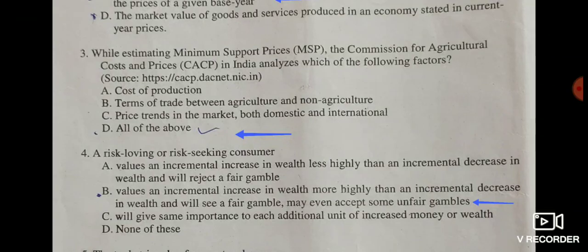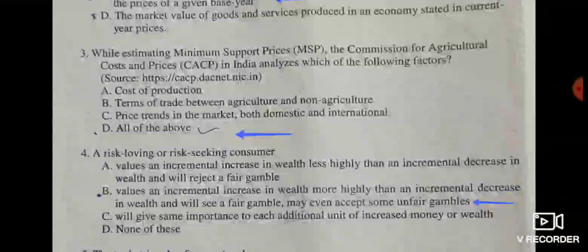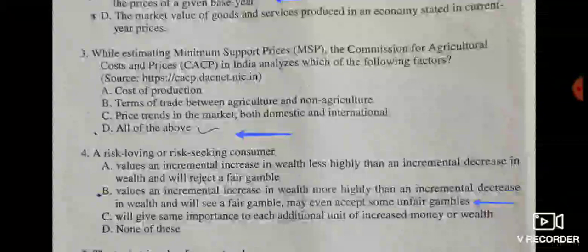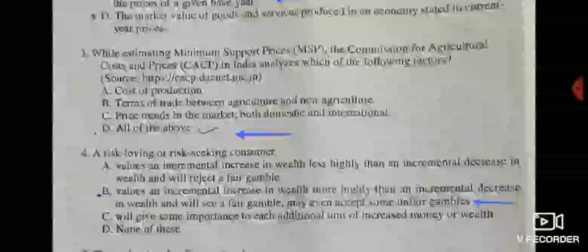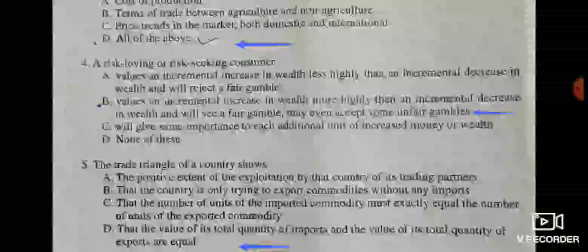Question number three: while estimating minimum support price (MSP), the Commission for Agricultural Cost and Prices in India analyzes which of the following factors — cost of production, terms of trade between agriculture and non-agriculture, and price trends in the market both domestic and international. The correct answer is option D: all of the above factors.